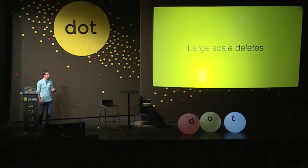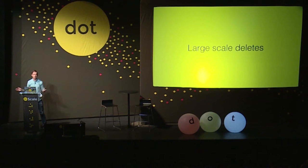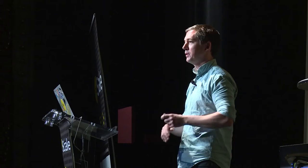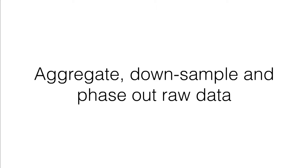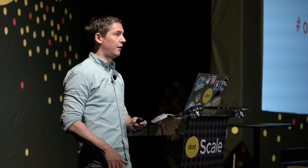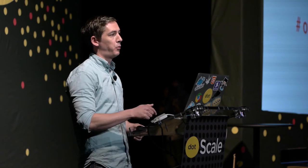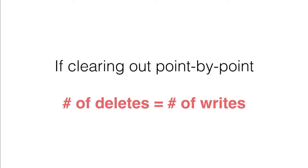The last reason why time series data sucks for databases is that it's very common to do very large-scale deletes — not individual records, but huge chunks of your data. This comes from the fact that a common use case is to keep high-precision data for a few hours or days, then aggregate and downsample so you only keep the summaries. Functionally, if you're clearing data on a point-by-point basis, the number of deletes equals the number of writes, which is totally insane for any database use case.